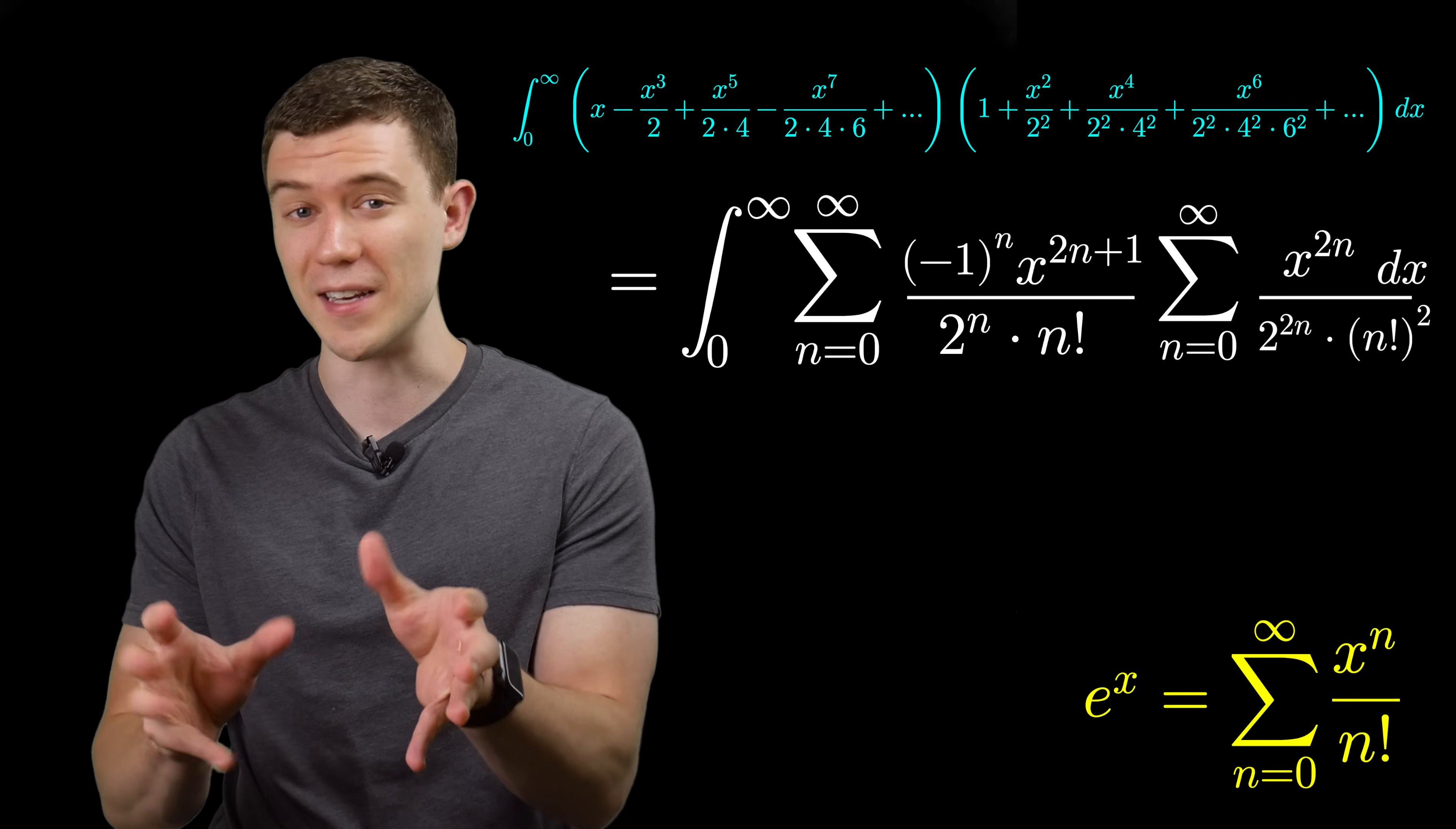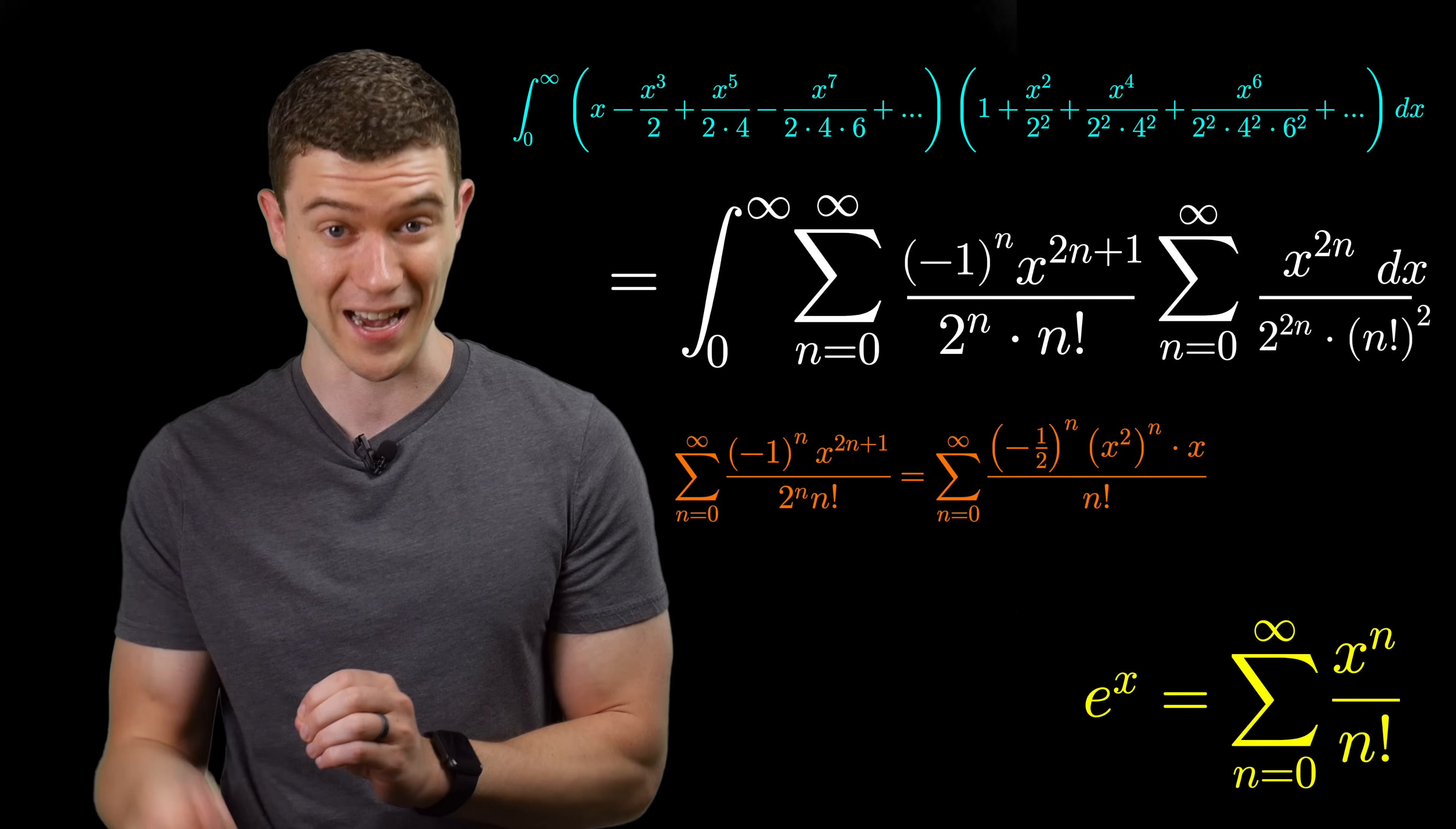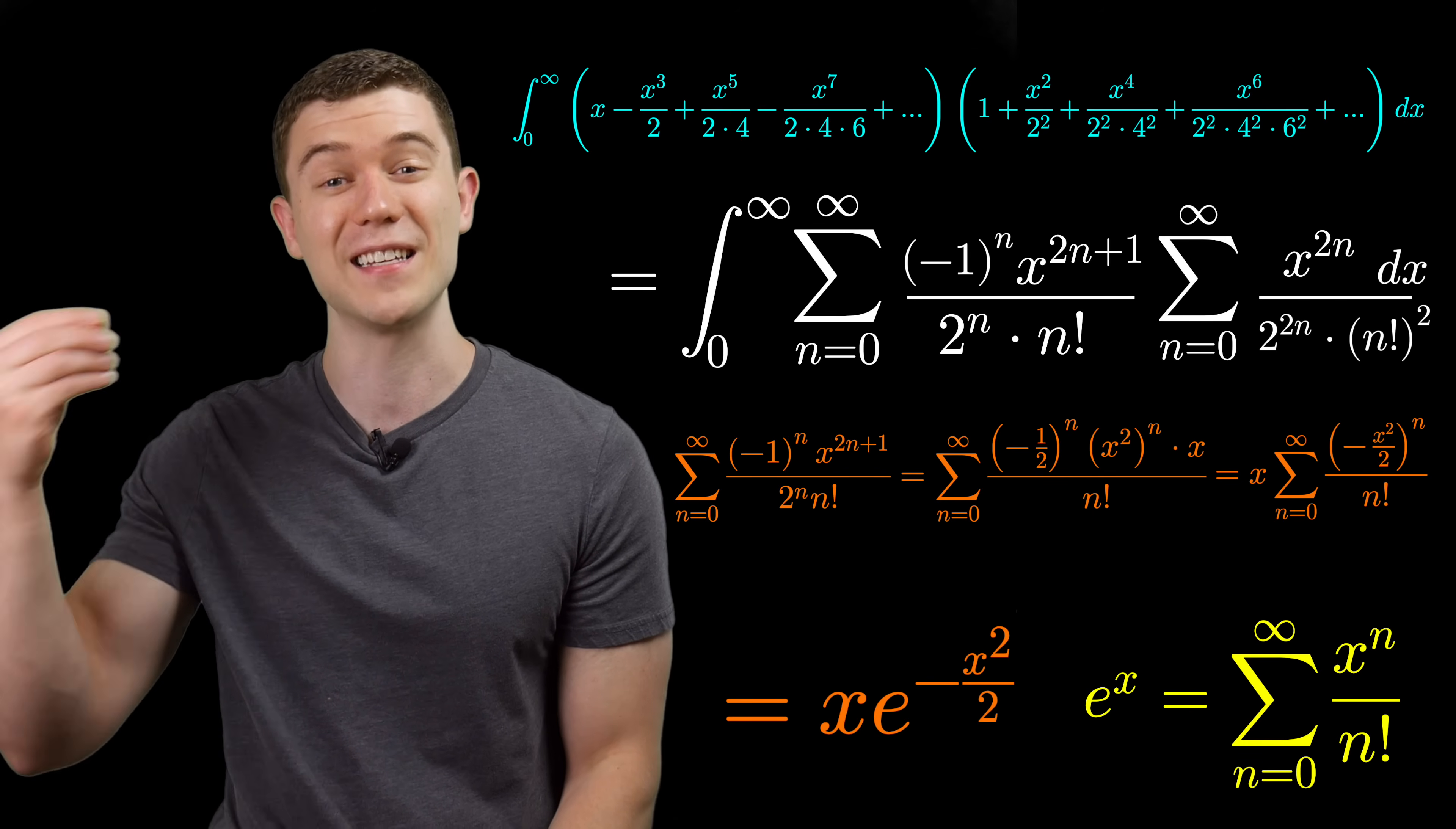If we can rearrange this, let's just leave the n factorial in the denominator, let's combine the negative 1 to the n over 2 to the n along with the x to the 2n, taking out that x to the first, and we can rewrite this in terms of a power series representation of e to the x. We can take that extra x out front and what we have is e to the x, but it's not x on the inside. It's minus x squared over 2 on the inside. So really this first sum is a fancy way to write x times e to the minus x squared over 2.